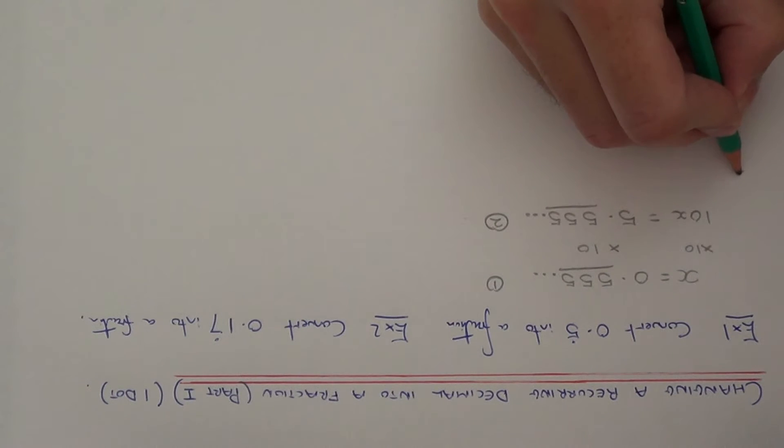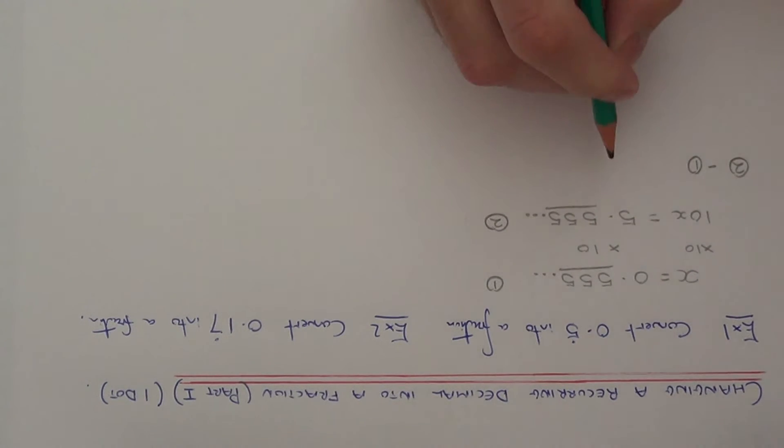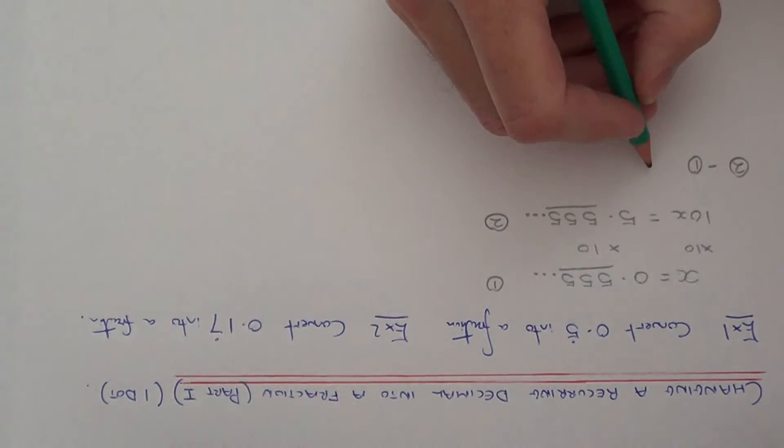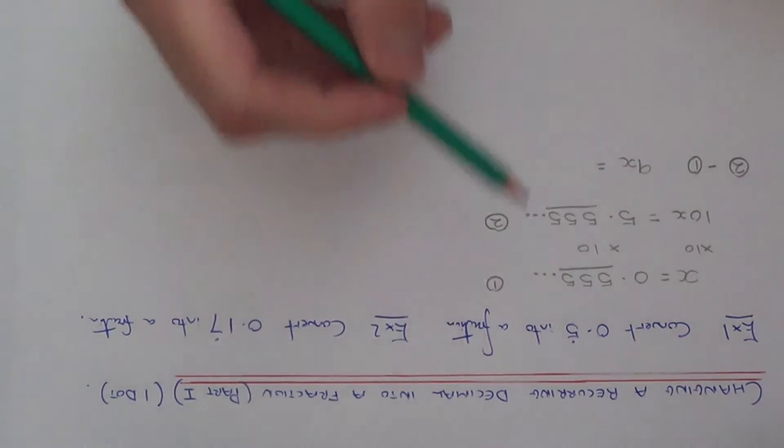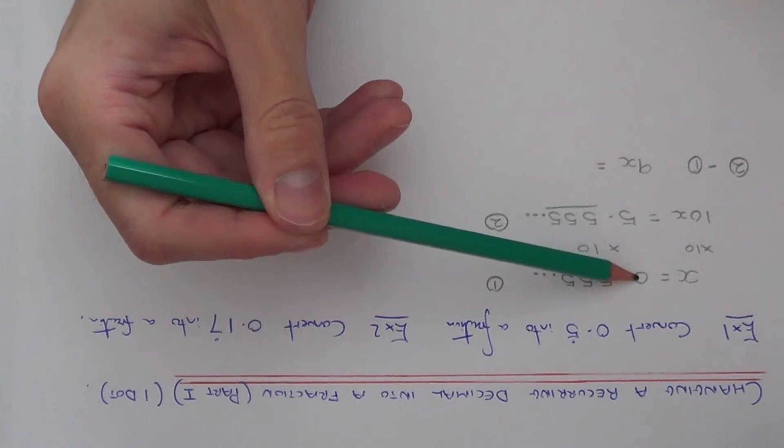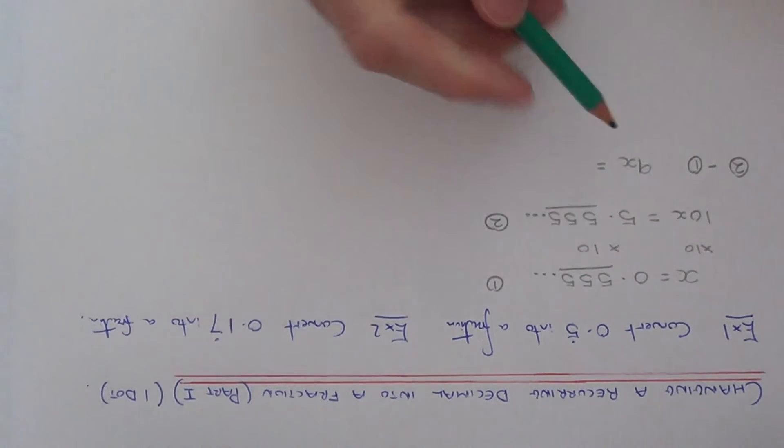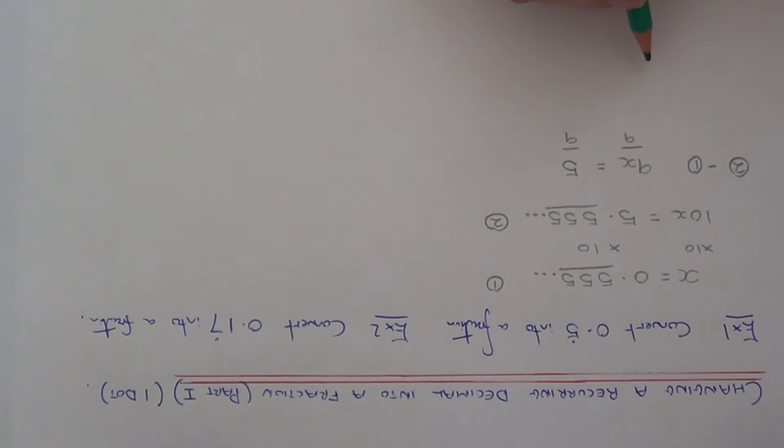What I'm going to do next is subtract these two equations away. So on the left hand side I'll have 10x take away 1x which gives me 9x. And on the right hand side all I need to do is take away the whole number parts, because I know the decimal bits cancel out. So 5 take away nothing gives me 5. And then all I need to do now is solve this equation by dividing both sides by 9, because x is being multiplied by 9. So I get x as 5 ninths. And as you can see I've converted it into a fraction.